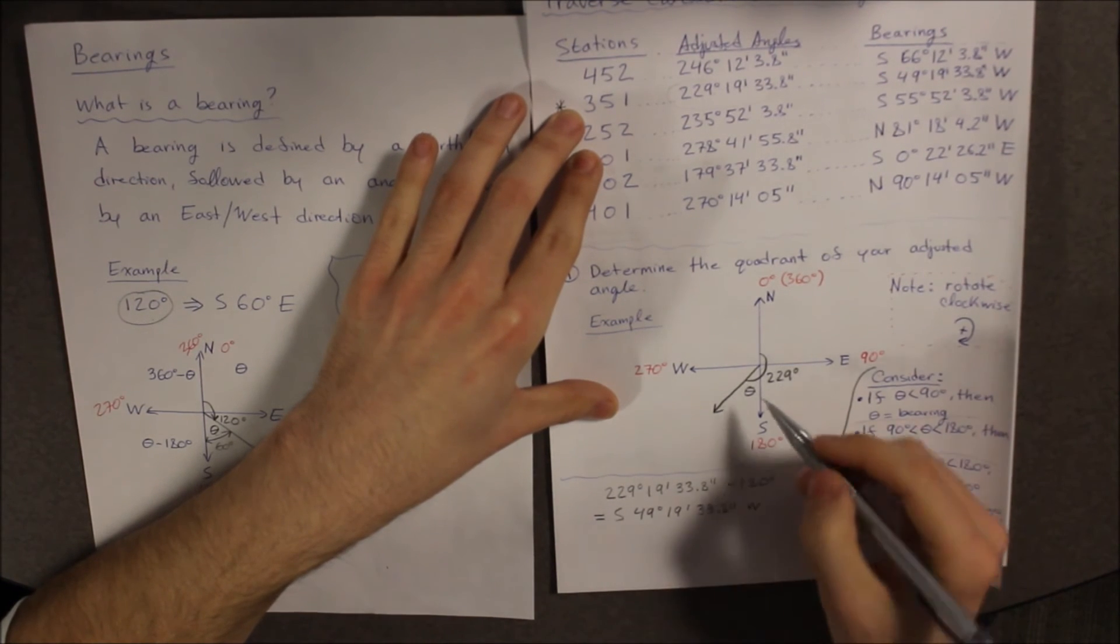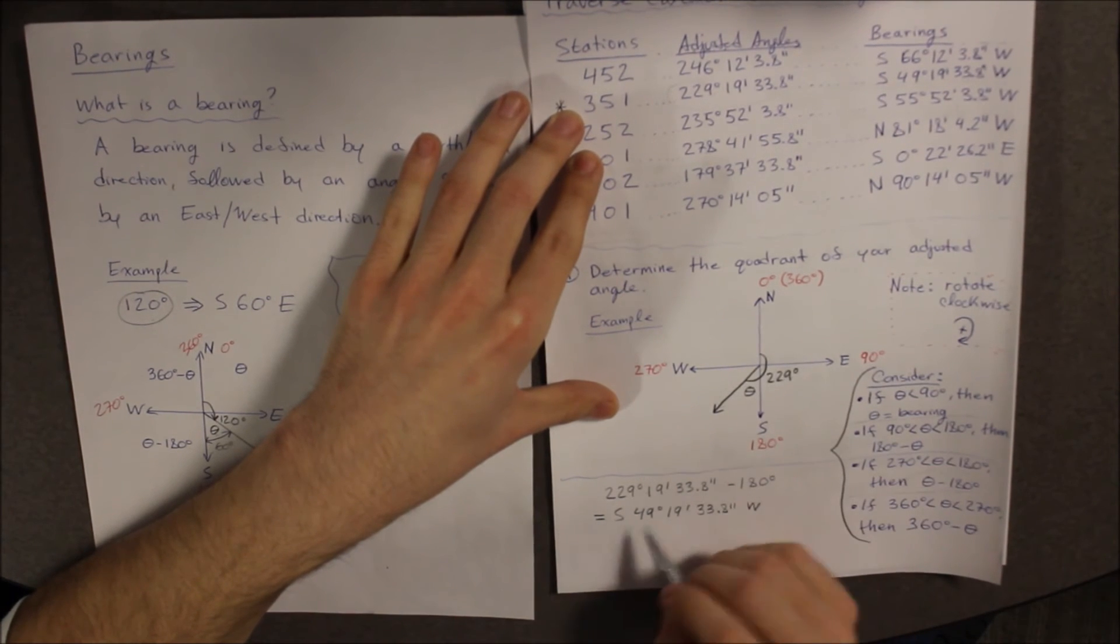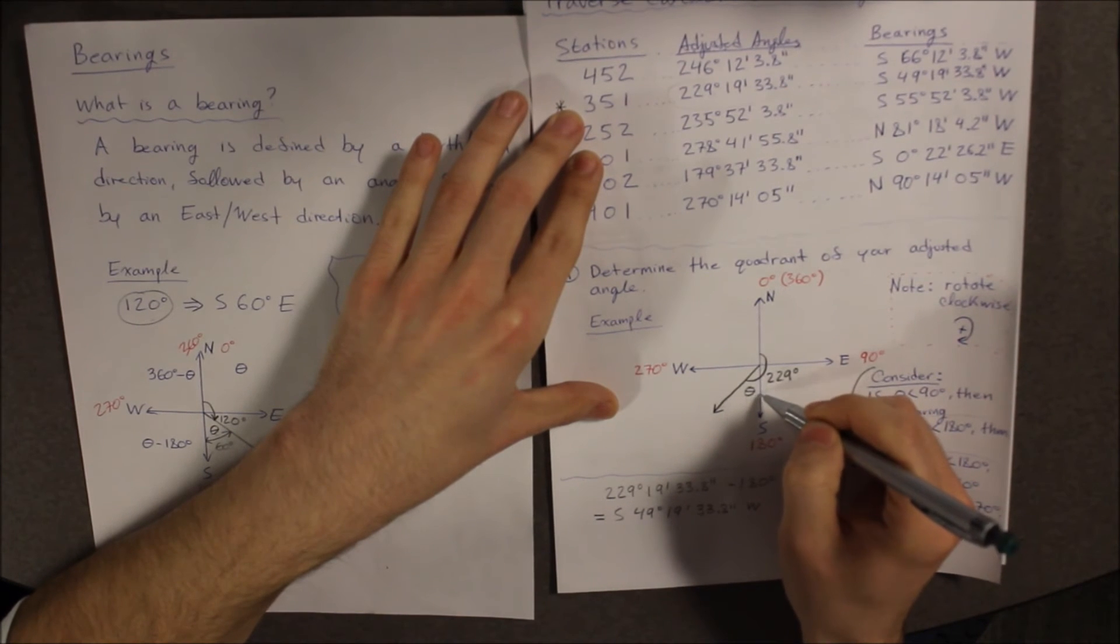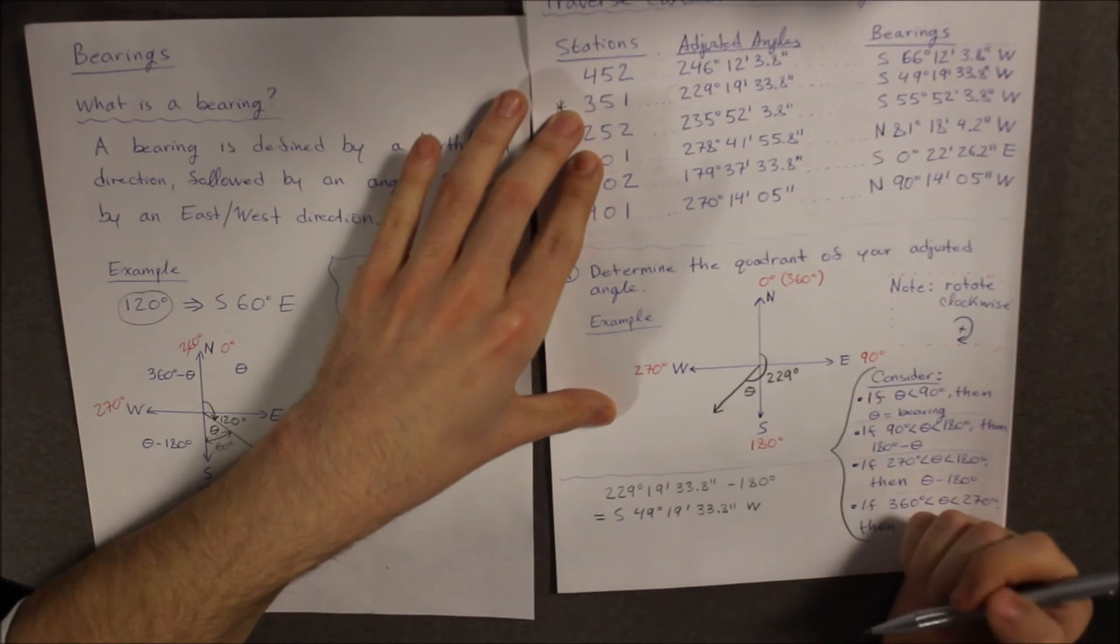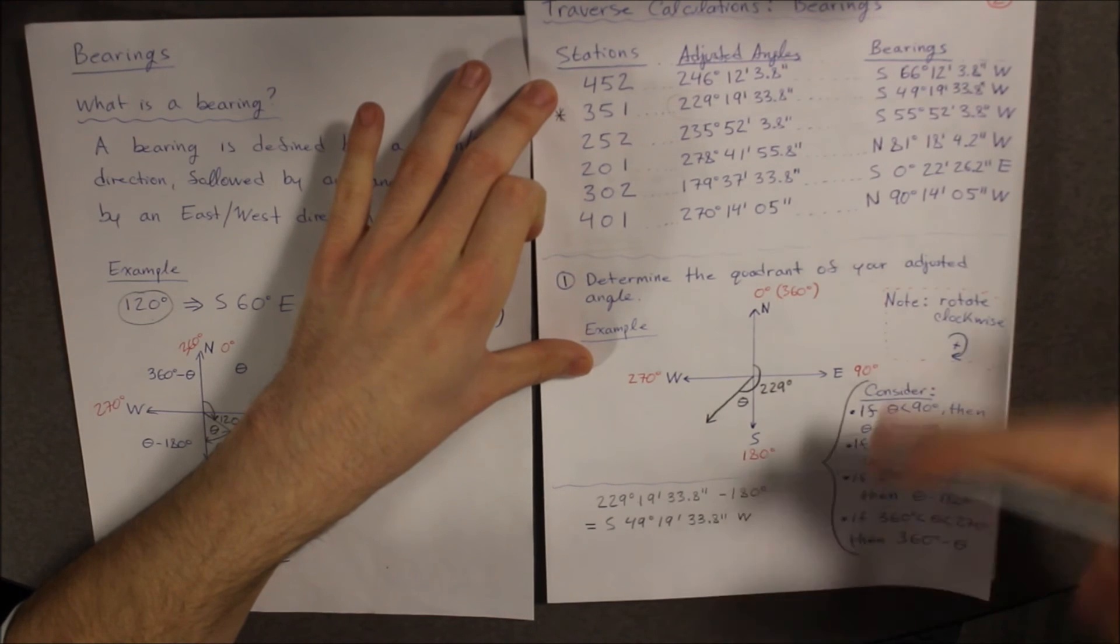Now, again, using our format that is here, our general direction is south. Therefore, it is south, our angle, and which direction is it going in? It is going 49 degrees towards west. Therefore, south 49 degrees west. That is how you do it, and you must apply this for each one.